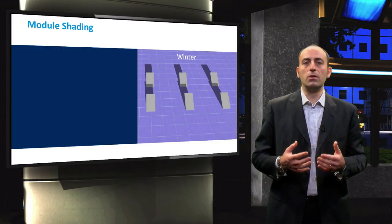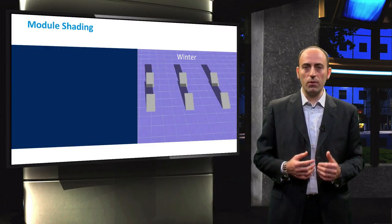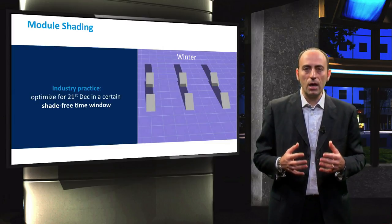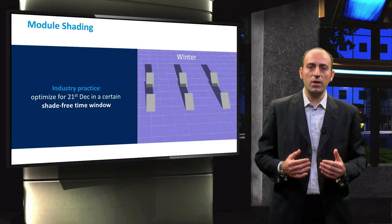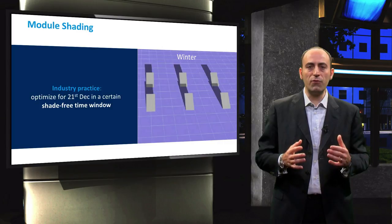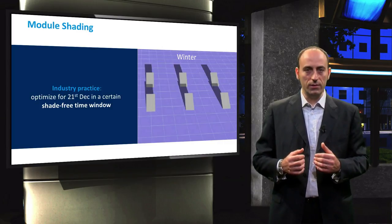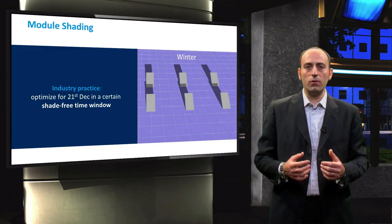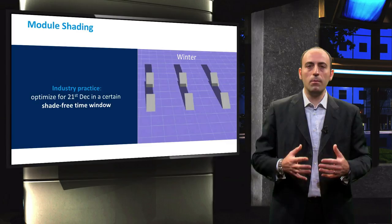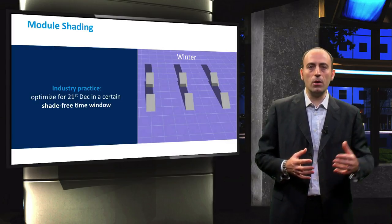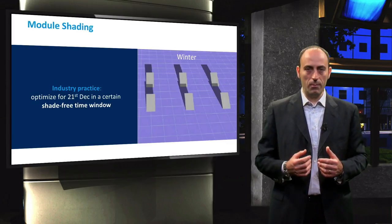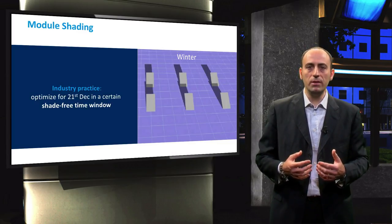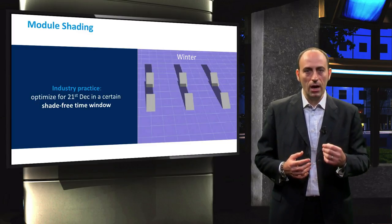Since the length of the shadow is the longest when the sun is lowest on the horizon, reaching its minimum on the 21st of December, it is common practice for installation companies to design and optimize the PV system for a shade-free time window on this date. Normally, this shade-free interval of time is an input from the customer, which needs, for example, the maximum power achievable by the system from 10 am to 2 pm. Then, based on this input, the engineer calculates what should be the inter-row spacing. Let's see how to do it.